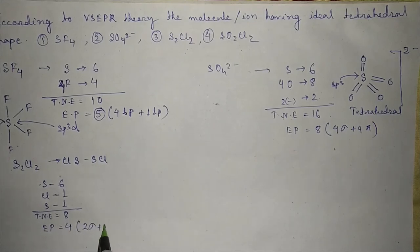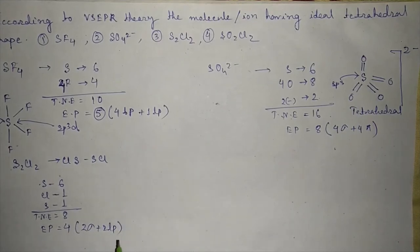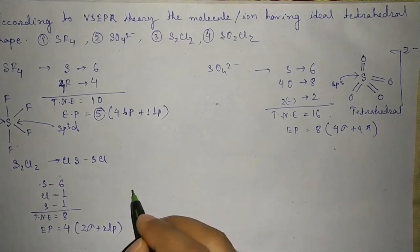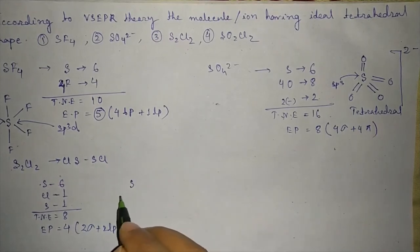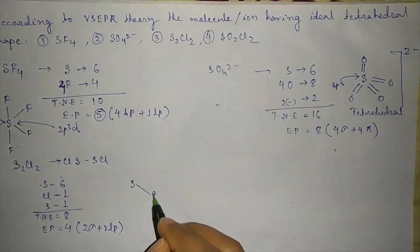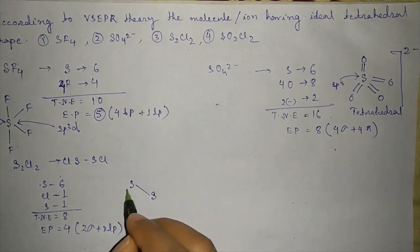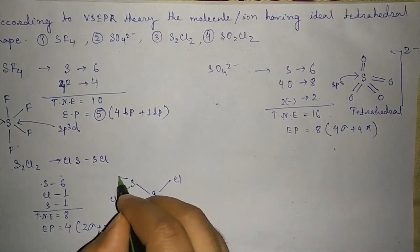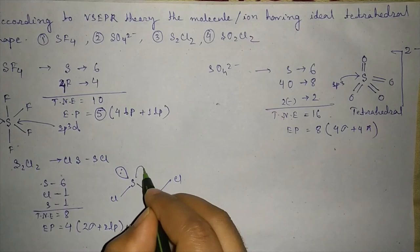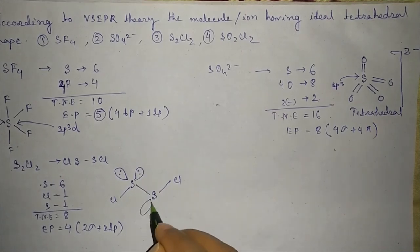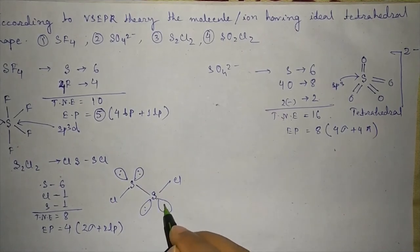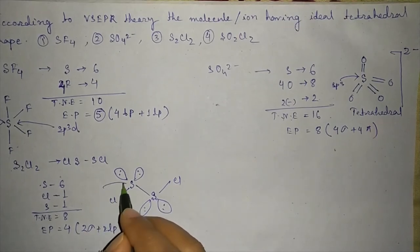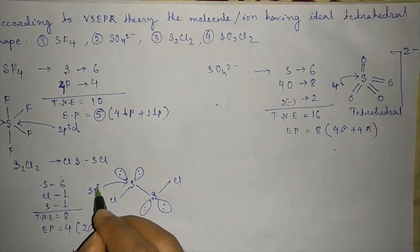Total number of electrons equal to 8. Electron pairs equal to 4. 2 sigma plus 2 lone pairs. The structure will be - yes, here it is. For this one also we have sp3.